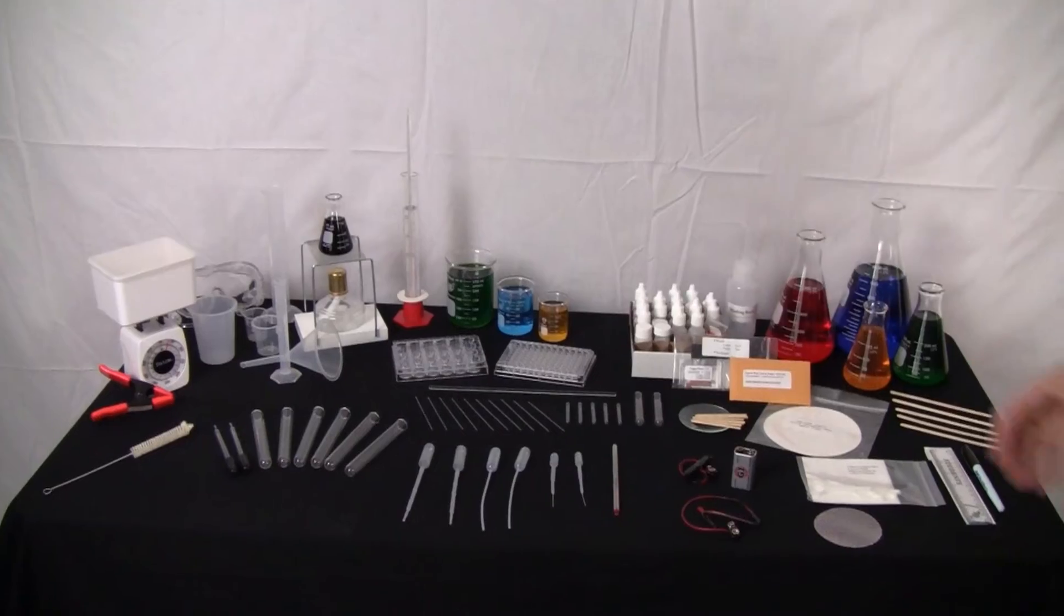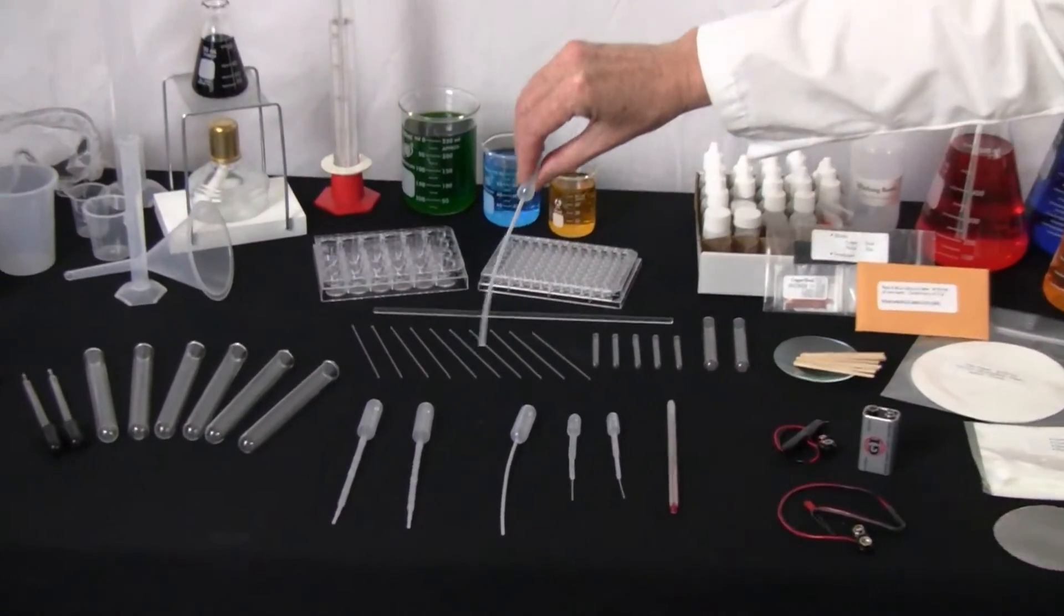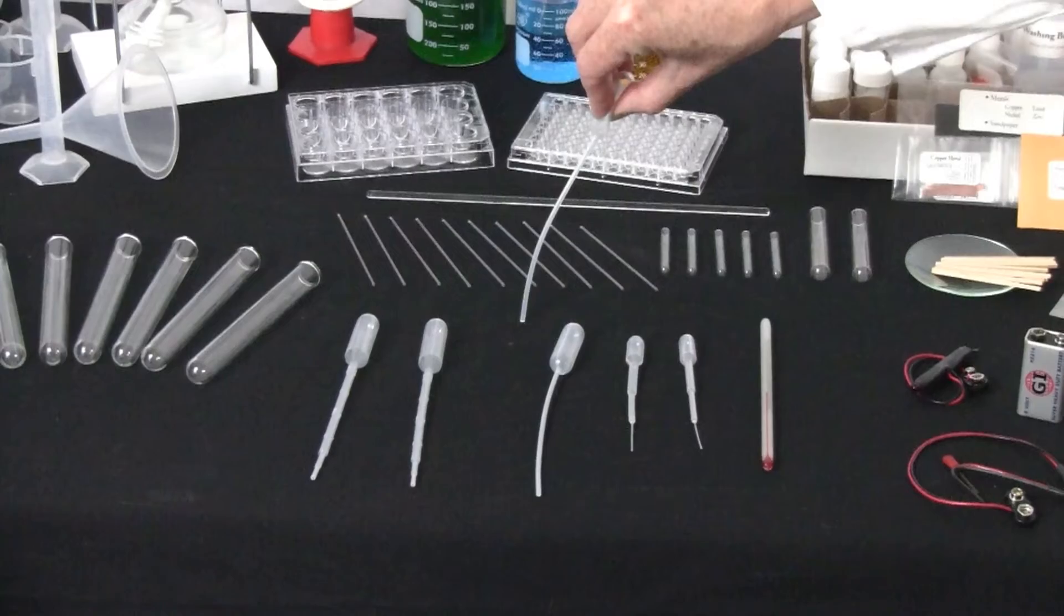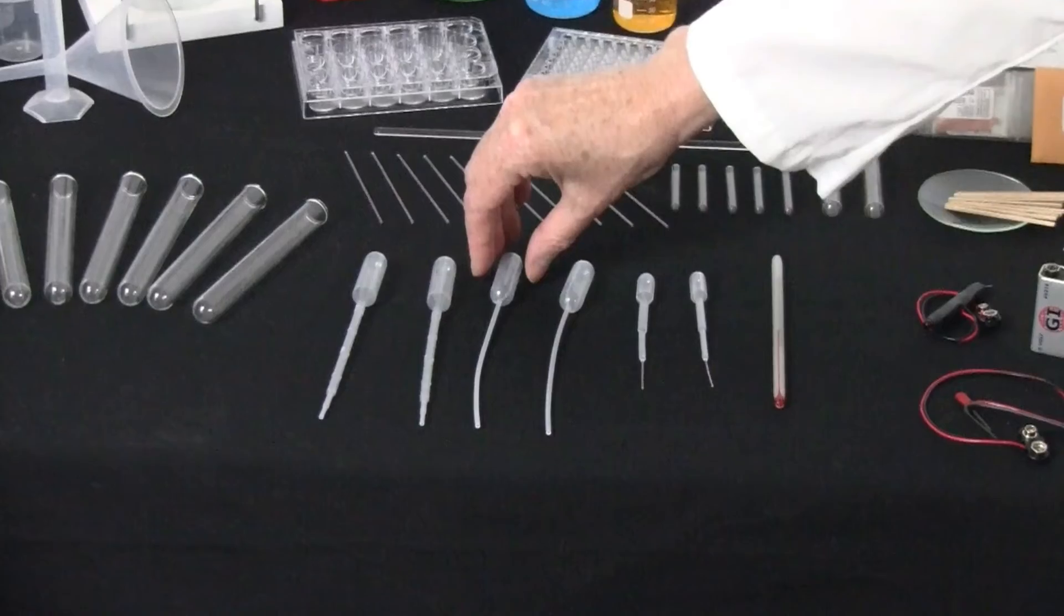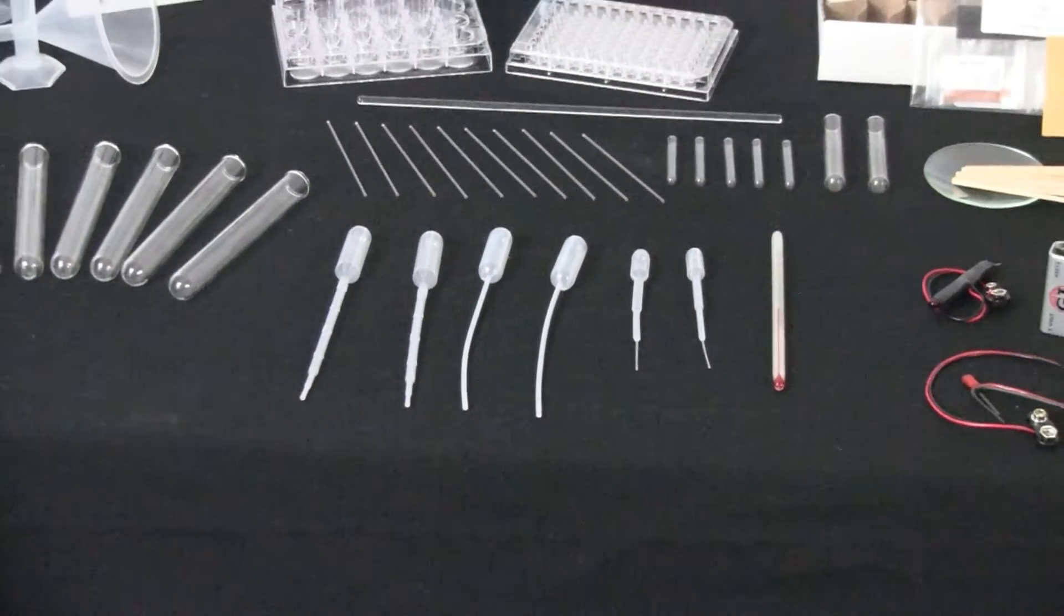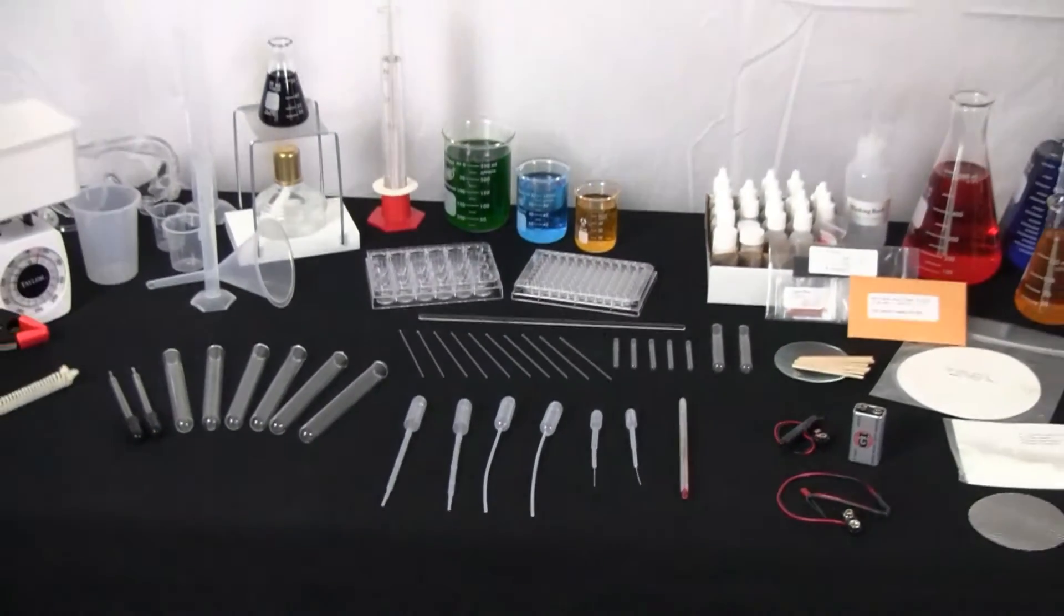Now we have pipettes. These little pipettes are used for getting a drop of something and putting a drop some place else, so small amounts of liquids can be grabbed through those pipettes.